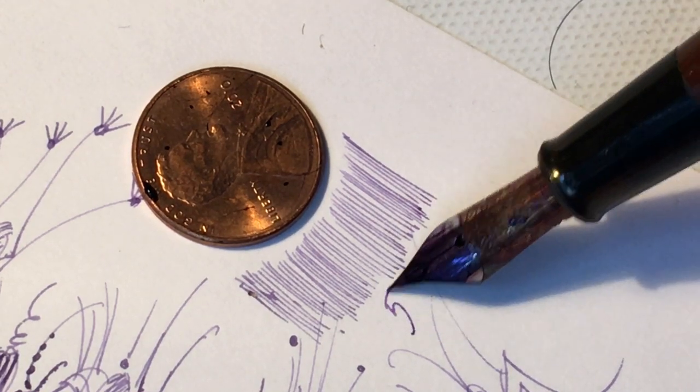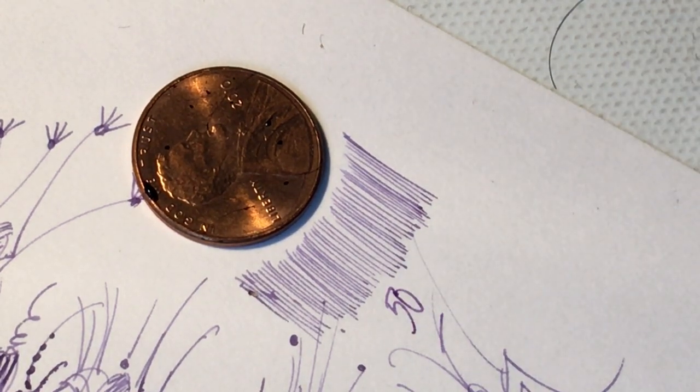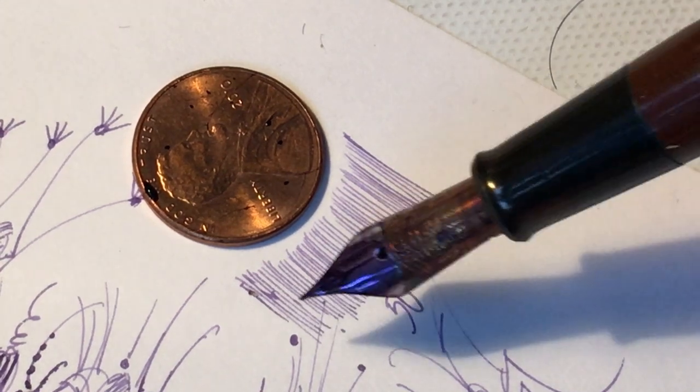So let's just see how many lines I can do here to get from here, the diameter of a penny. There's about 50 lines there. And you can see that they're distinct. 50 lines in the diameter of a penny.